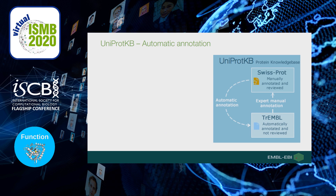TrEMBL records that pass into the SwissProt section should go through a process of expert manual annotation. However, this process is slow and cannot cope with the tens of millions of records in TrEMBL. That's why we have a parallel process of automatic annotation that uses the SwissProt section as reference data to enrich TrEMBL records. We've developed two prediction systems to automatically annotate TrEMBL in an efficient and scalable way with a high degree of accuracy: a semi-automated system and a fully automated system.